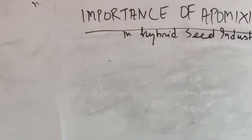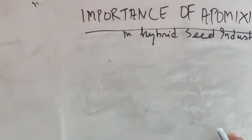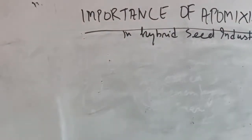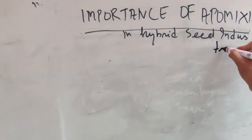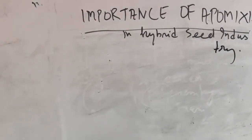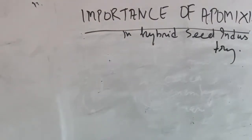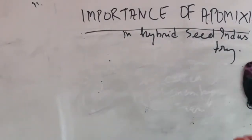Normally, forming seeds is a long process: the male gamete from pollen grains and the female gamete come together, they fuse, then a zygote forms, then an embryo. To skip all that process, if we can use apomictic seeds in the hybrid seed industry, it will be very helpful for farmers. In hybrid seeds, you select desired pollen grains and desired plants, they fuse, and you get your hybrid seeds — which are much better than normal seeds.